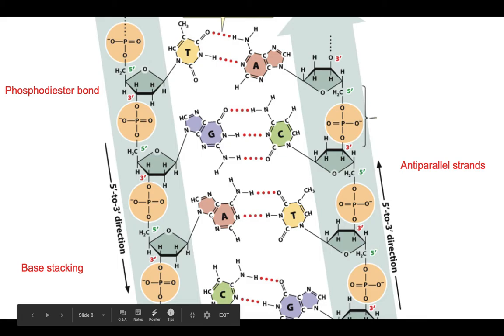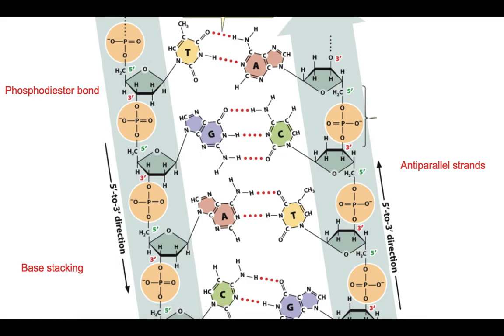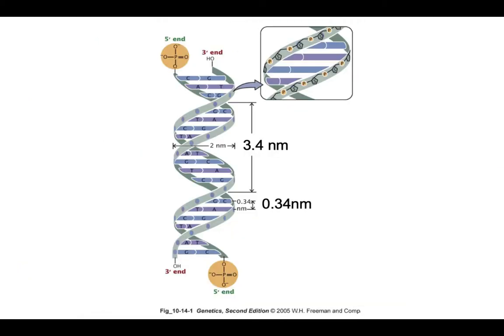Base pairs stack on top of each other to maximize hydrophobic interactions which stabilize the double helix. In the double helix, major groove occurs where the backbones are further apart and the minor groove occurs where the backbones are closer together.